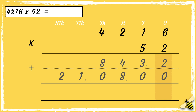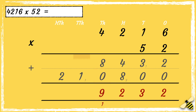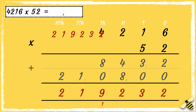The next step is to add the two answers together. So two add zero is two, three add zero is three, four add eight is twelve, eight add zero add one is nine. Then we're left with ten thousands and two hundred thousands. So the answer is two hundred and nineteen thousand, two hundred and thirty-two.